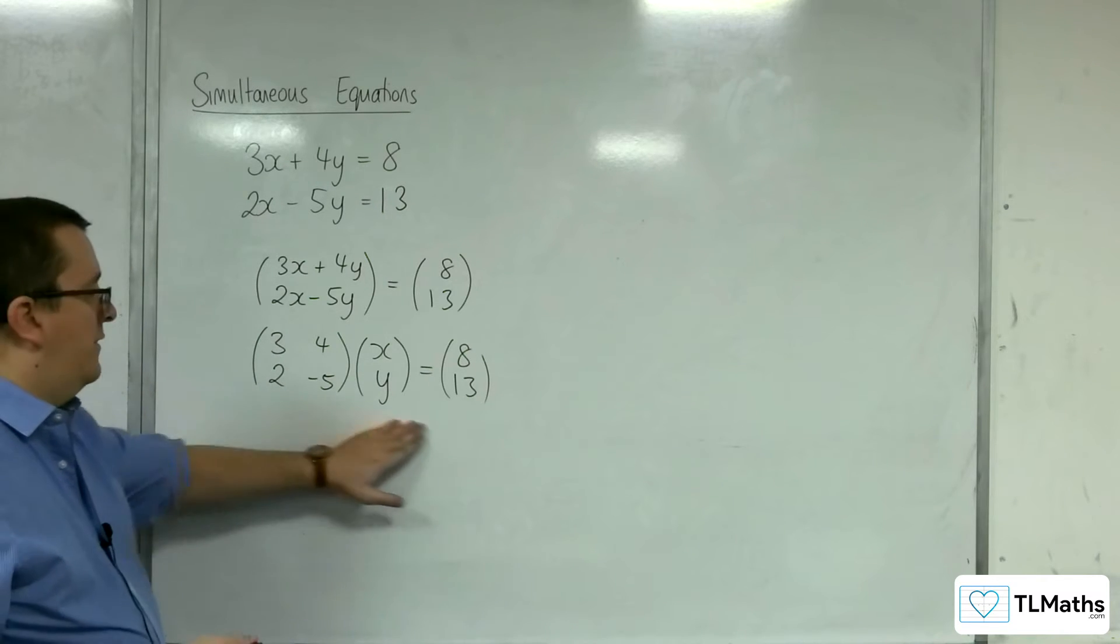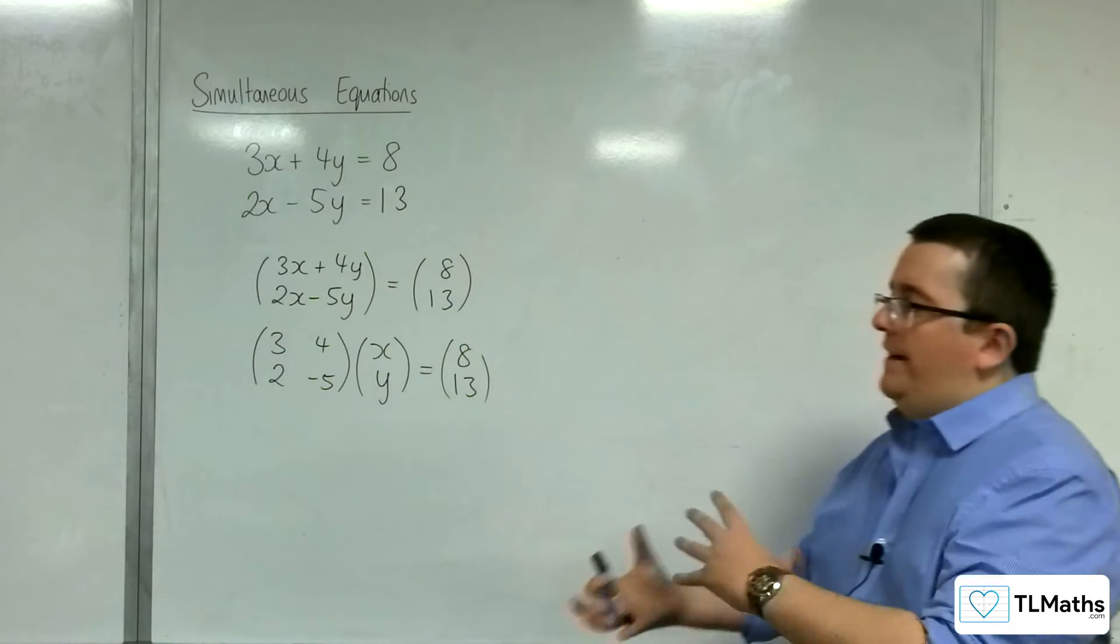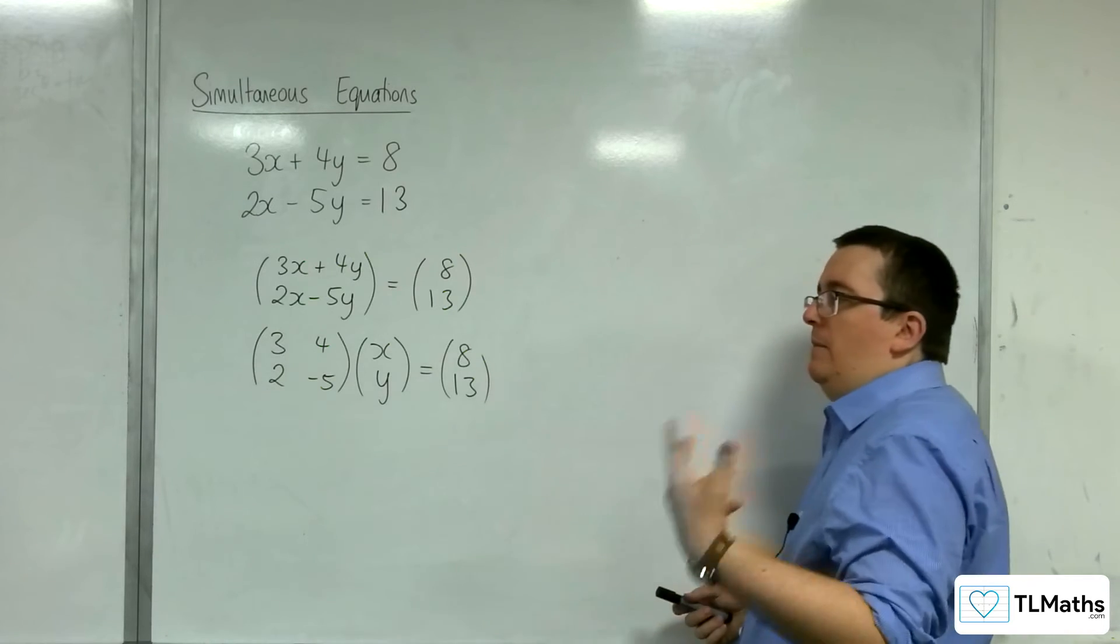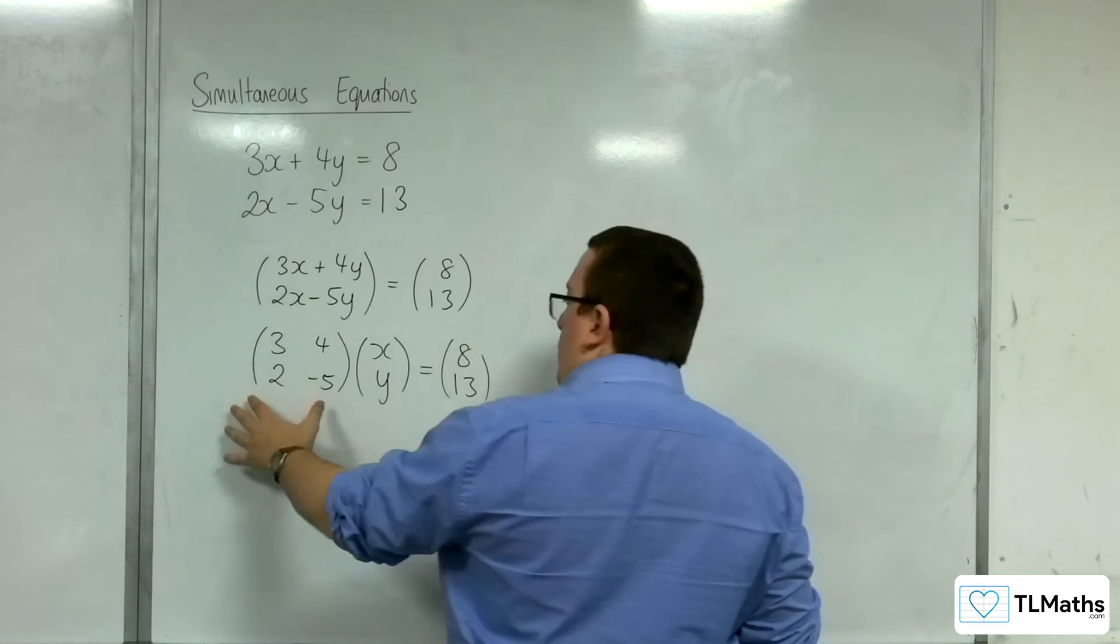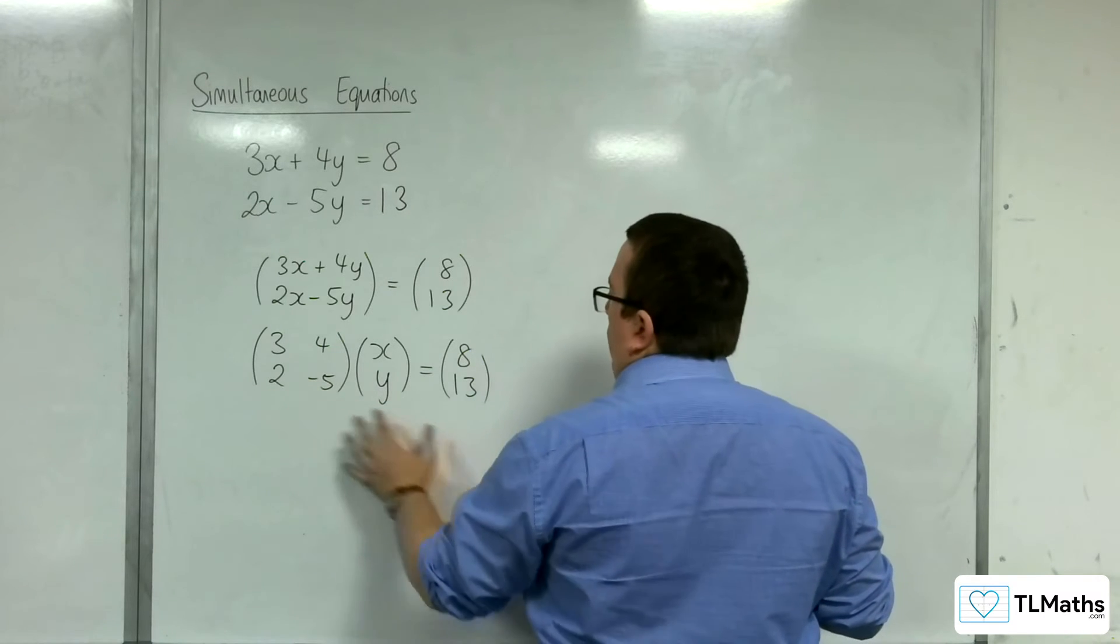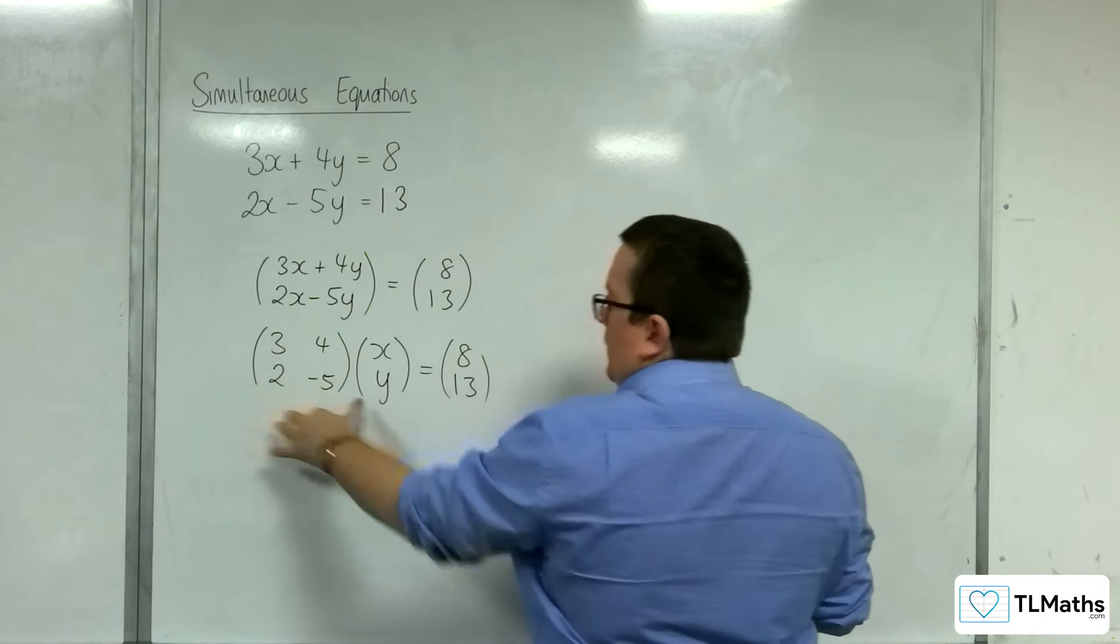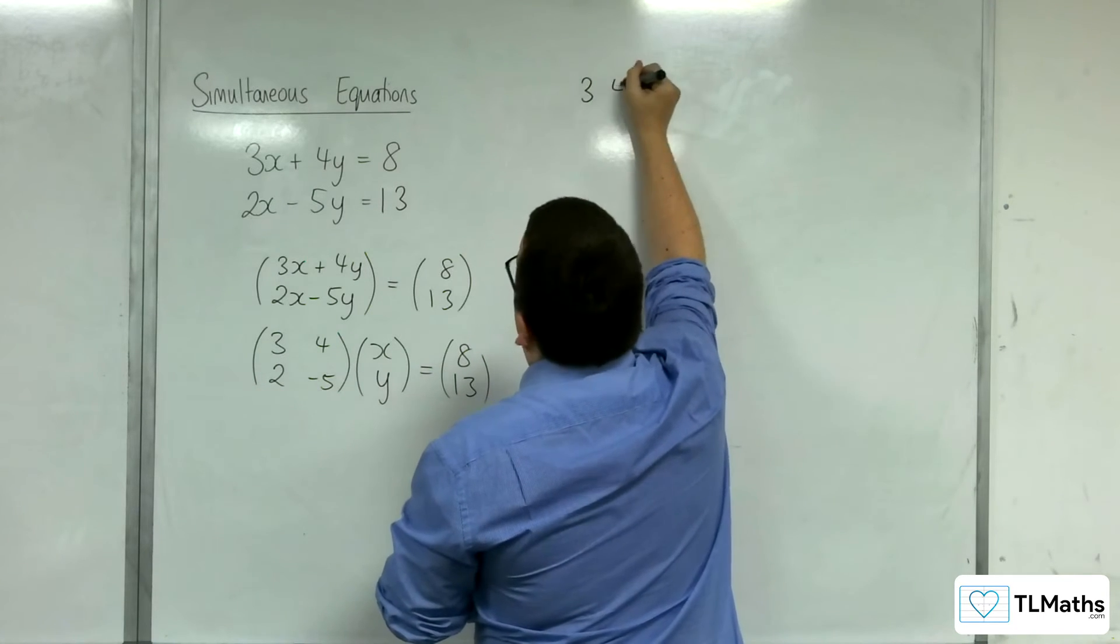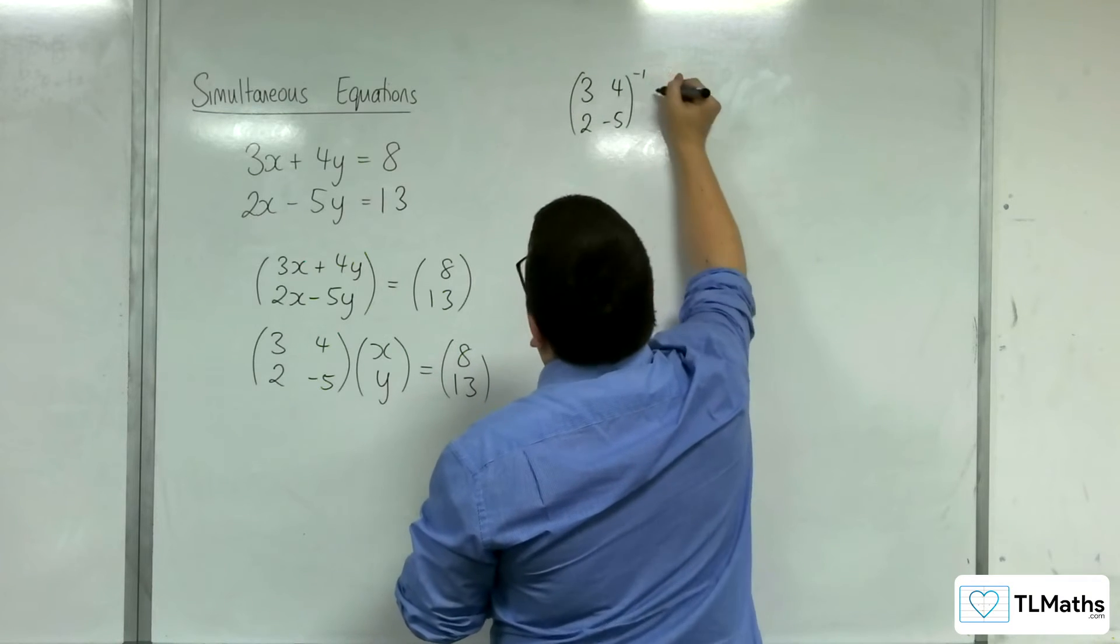So the next thing is you're looking at that saying, right, okay, well, I need to get x, y by itself. I need to unpick it, unravel it. So the way to unravel a matrix is to multiply it by its inverse. So I'm going to multiply both sides of this equation by this matrix's inverse.